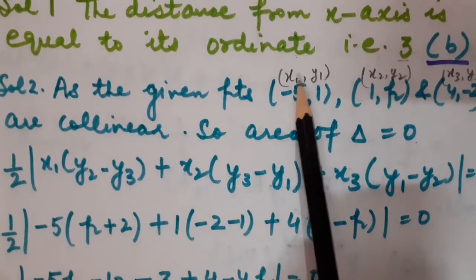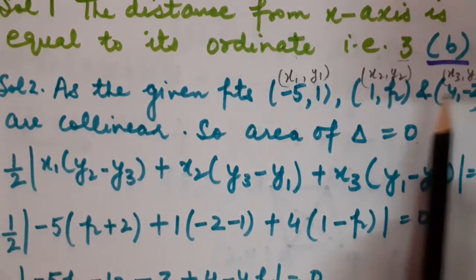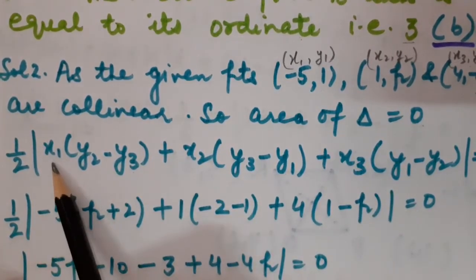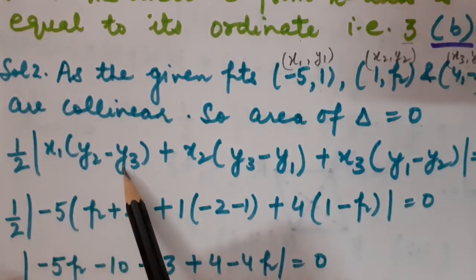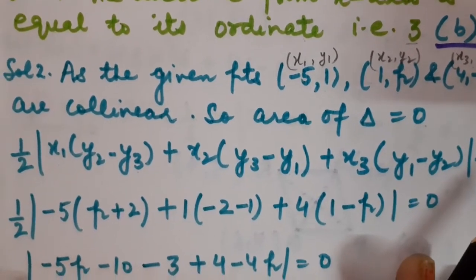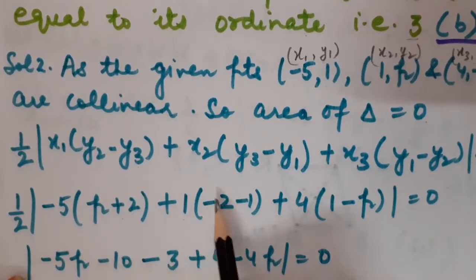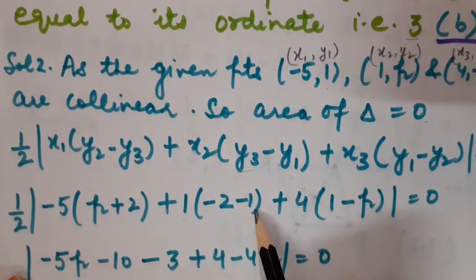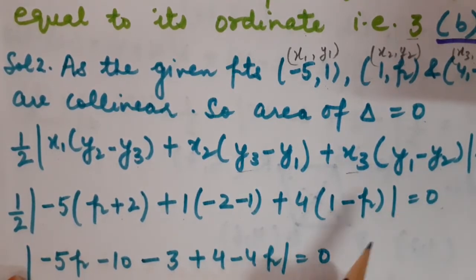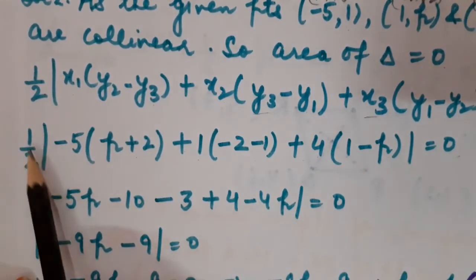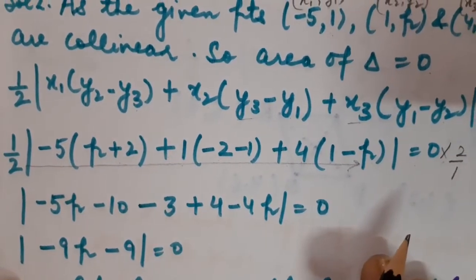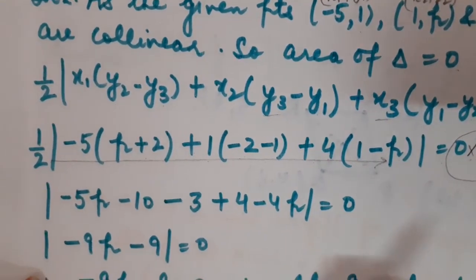Let us assume these points as (x₁,y₁), (x₂,y₂) and (x₃,y₃). Putting these values: half × |(-5)(P−(−2)) + 1×(−2−1) + 4×(1−P)| = 0. So (1/2) will go to the right hand side giving 0. This gives us −5P − 10, then −2−1 gives −3 into 1 that is −3, plus 4 − 4P equals 0.